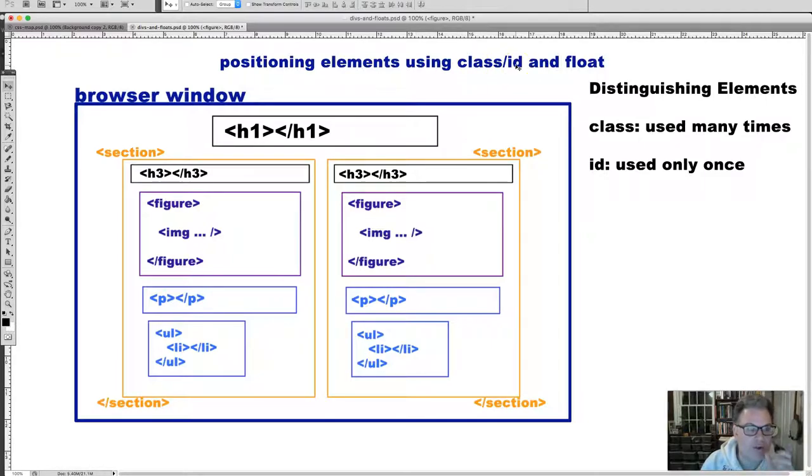Any HTML element can have the class or ID attribute applied to it. We're going to be focusing right now on the section but it can headers can have class and IDs applied to it. Figures can have class and ID applied to it. Image can have class ID applied to it. Paragraph, UL, LI, anything on the page except for the body and the HTML tags. Everything else can have class and ID attributes.